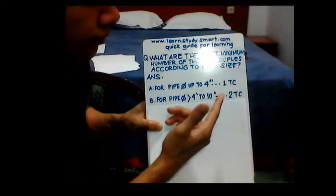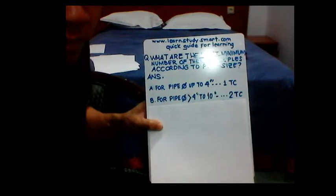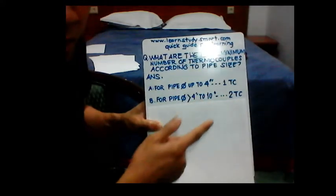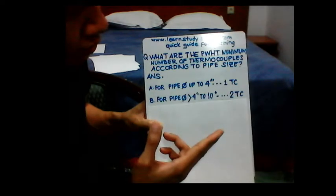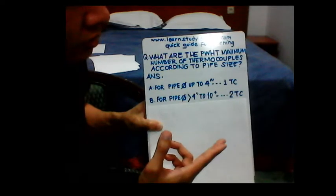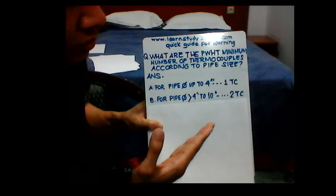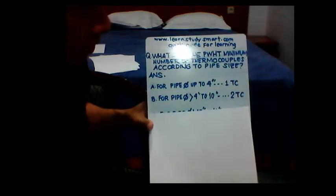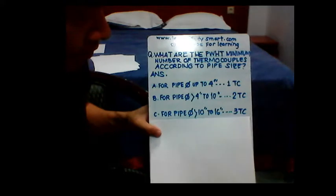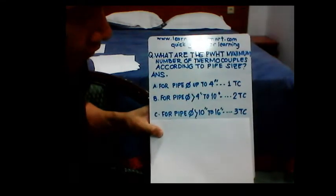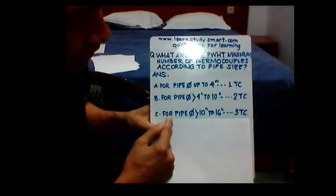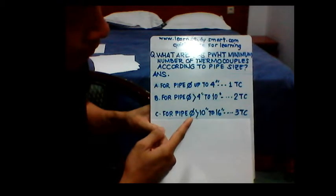For pipe diameter greater than four inches up to ten inches, the minimum is two thermocouples. The thermocouple position is between zero degrees to 180 degrees of the pipe weld.